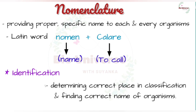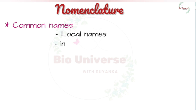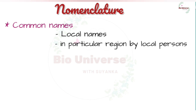Nomenclature is of two types: common names and scientific names. Common names are local names given to organisms in a particular region and language by local persons. Each region, tribe, and language has its own specific names for organisms known in the area so that they can be properly identified.